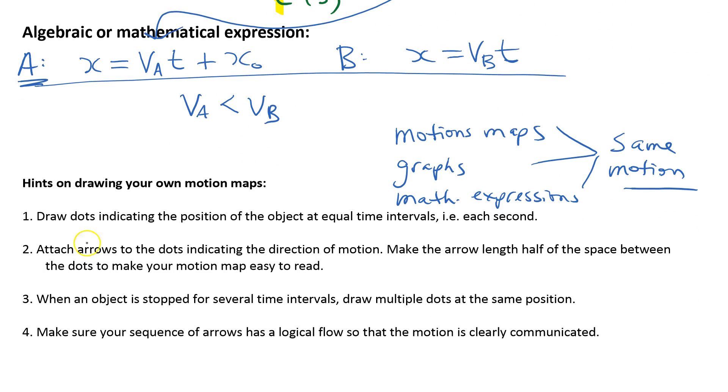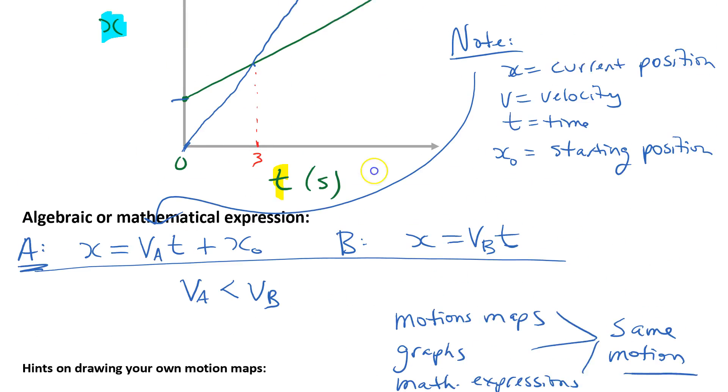Here's some hints about drawing motion maps. Draw dots indicating the position of the object at equal time intervals. Unless we say otherwise, you can say one per second. Attach the arrows to the dot indicating the direction of motion. Make the arrow length half of the space between the dots to make your motion map easy to read. When an object is stopped for several seconds, draw multiple dots at the same position and make sure your sequence of arrows has a logical flow so it's easily communicated.